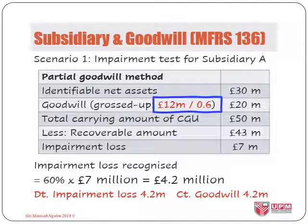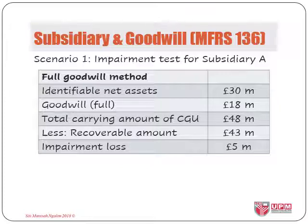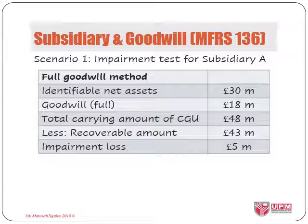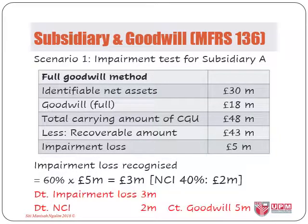Remember that for subsidiary A, the goodwill recognised at acquisition was only the parent's portion since we assumed the entity used partial goodwill method at acquisition. Now if the entity used full goodwill method at acquisition, the goodwill amount will be at £18 million, and therefore the total carrying amounts of the CGU becomes £48 million. Comparing with the recoverable amount, we have an impairment loss of £5 million. This loss must be recognised and shared by parent and NCI at their percentage interest. When we recognised the full value of goodwill at 100% initially, the portions of it must reduce the carrying amounts of NCI.